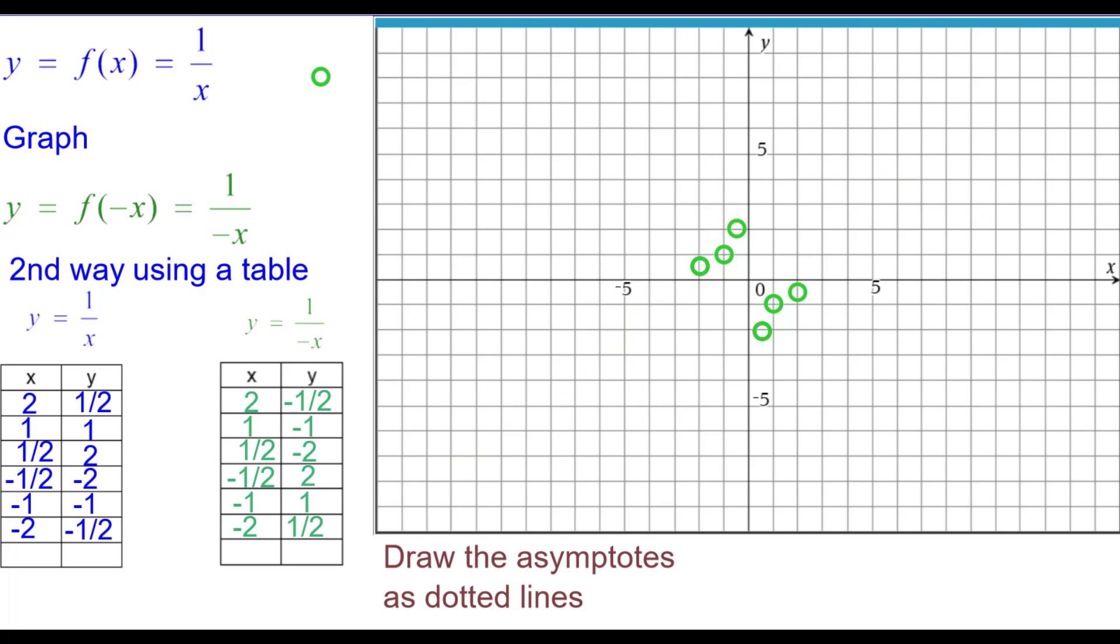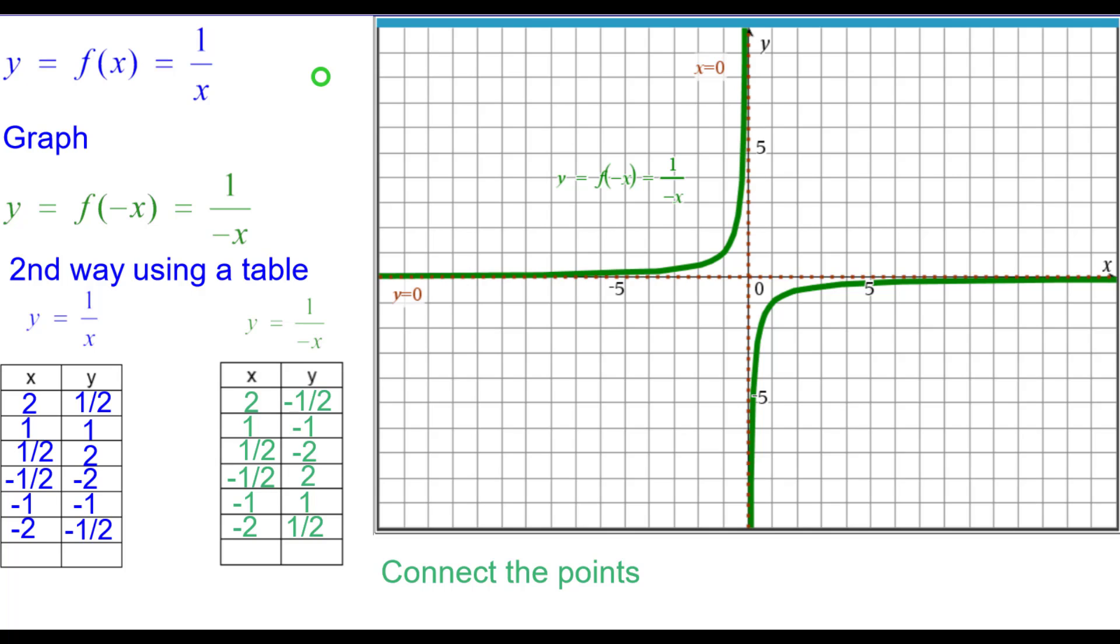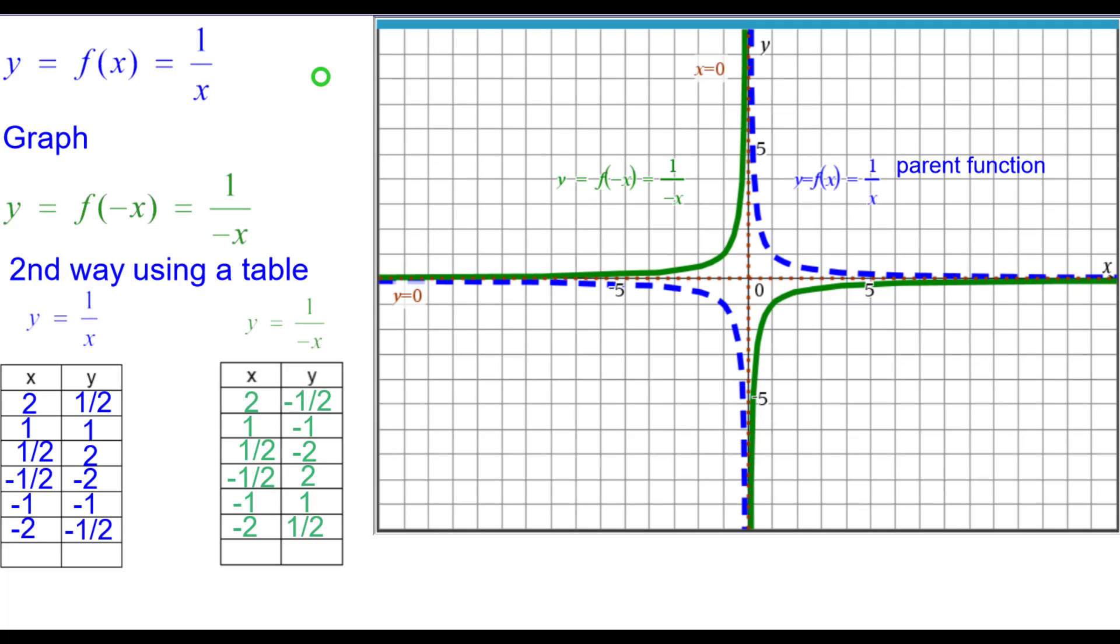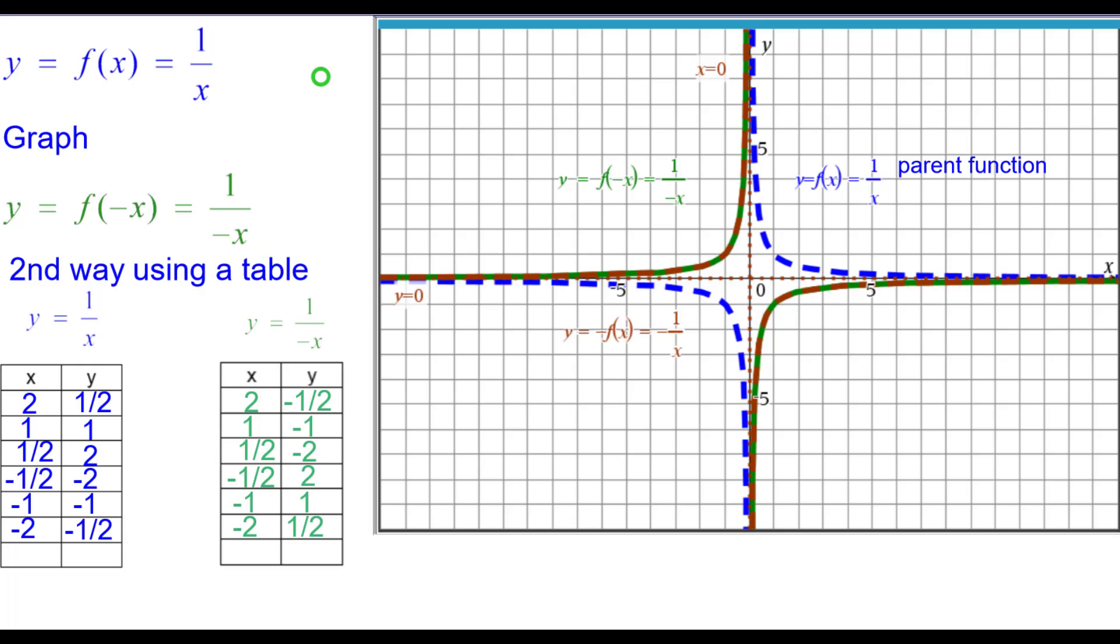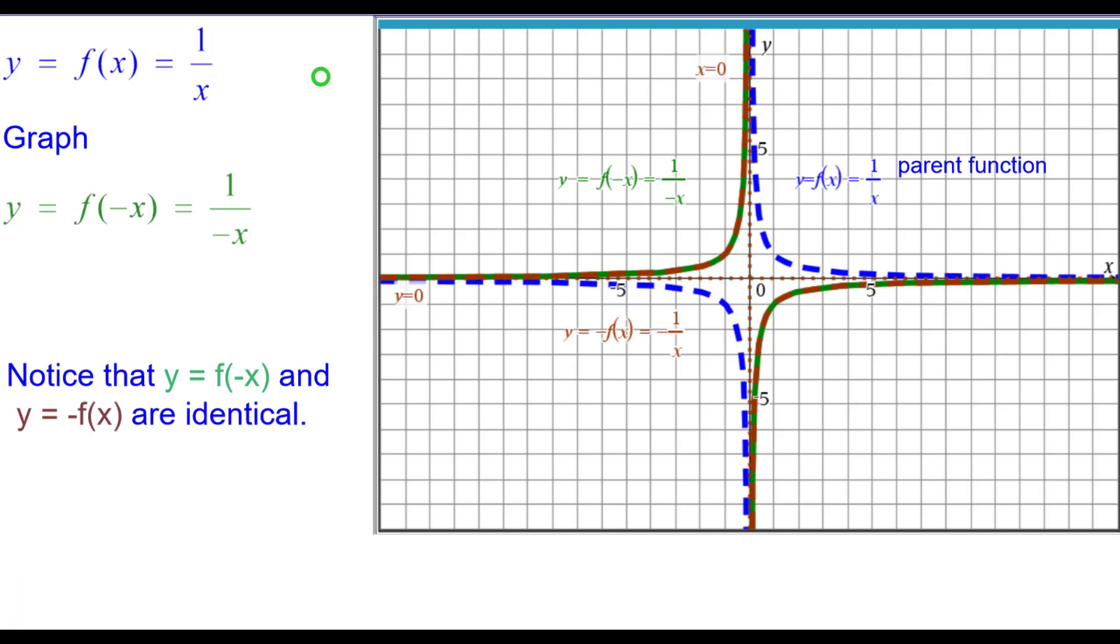Draw the asymptotes, the boundary lines for the curve, and connect the points. Compare that to the parent function. You can see that those are not equal. Bring in y equals the opposite of f of x, and you can see that those two are identical. The green and the brown ones are identical, and that makes the reciprocal function an odd function.